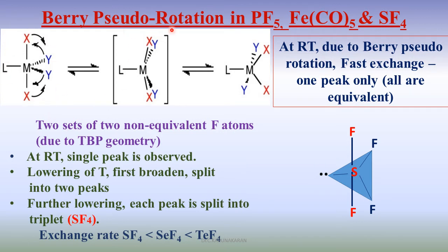They undergo Berry pseudo-rotation, which occurs via square pyramidal geometry. Due to this rotation, axial positions become equatorial, equatorial becomes axial. The TBP and square pyramidal geometries have very little energy difference. Therefore, they undergo Berry pseudo-rotation to give a flexional character.